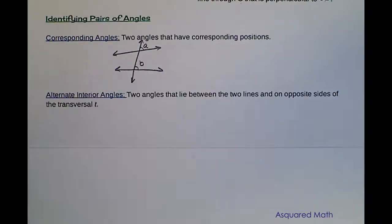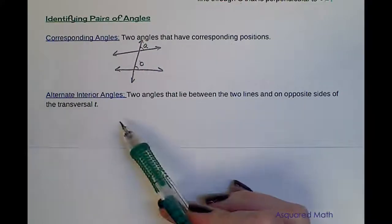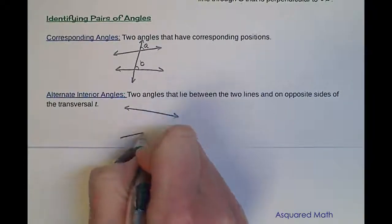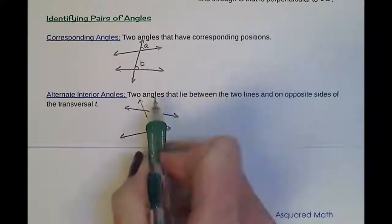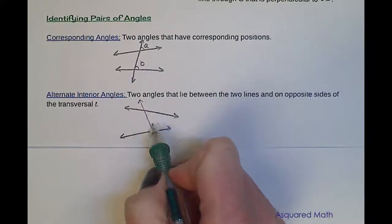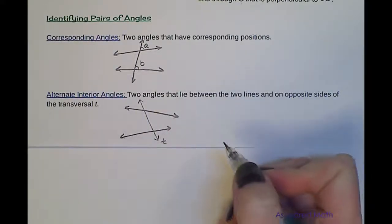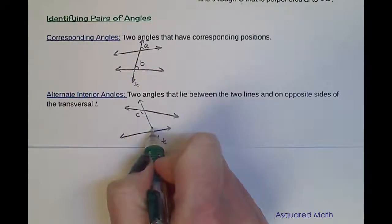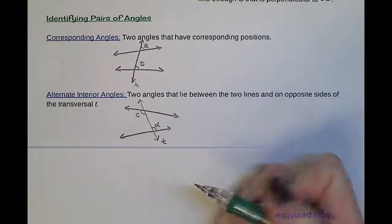The next set of angles are called alternate interior angles — two angles that lie between the two lines and on opposite sides of the transversal T. So we're inside the two lines, on opposite sides of the transversal. If we label angle C and angle D, these are alternate interior angles because they're on the inside of the two lines on opposite sides of the transversal.